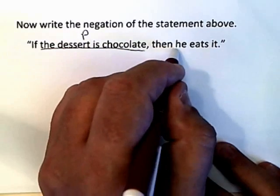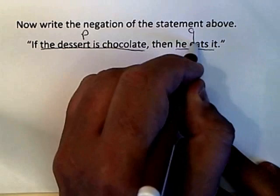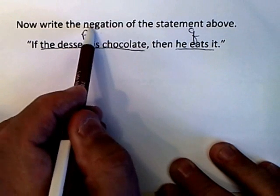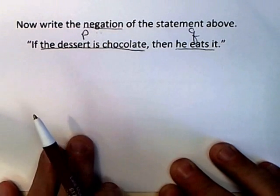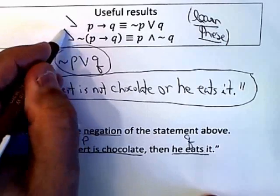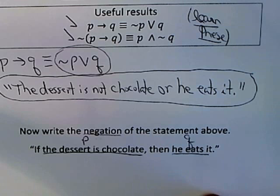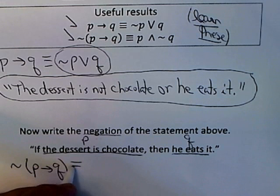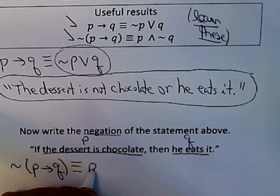So the dessert is chocolate is p, he eats it is q. But this time I want to write the negation of it. So that means I have to go back and use this formula. So if I write that down so I can get to it better, I have the negation of p implies q is equivalent to p and not q.